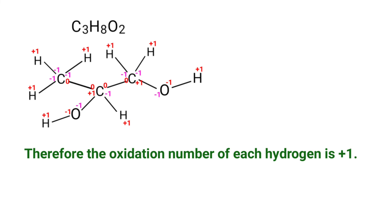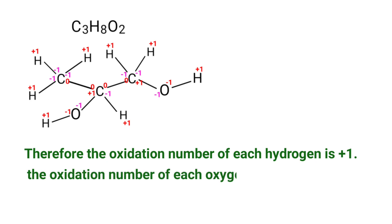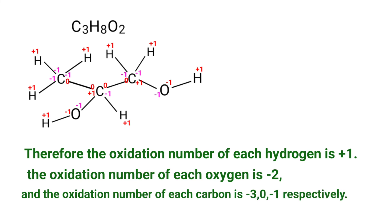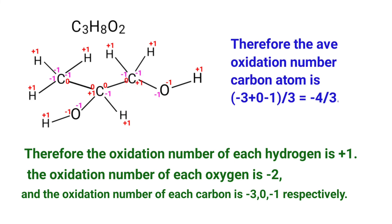Therefore the oxidation number of hydrogen is +1, the oxidation number of oxygen is -2, and the oxidation number of each carbon is -3, 0, and -1 respectively. Therefore the average oxidation number of the carbon atom is (-3 + 0 + (-1)) / 3, which is equal to -4/3.